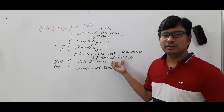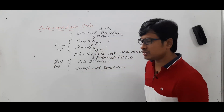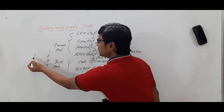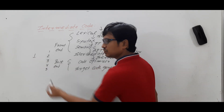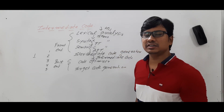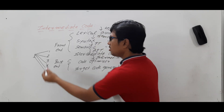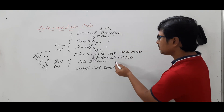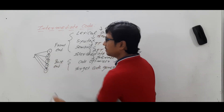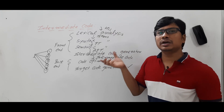If we do not have the intermediate code, what would happen? Suppose you have one source language and there are n number of target machines. The source code has to run on all those target machines. If you do not have any intermediate code, then you need to design n compilers, because you would need n code optimizers and n target code generators to generate the assembly language for each one. So without intermediate code, you would need to design a native compiler for each machine.